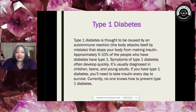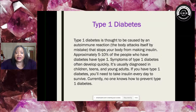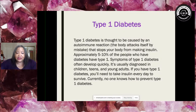Type 1 diabetes is thought to be caused by an autoimmune reaction — when the body attacks itself by mistake and stops making insulin. This affects a small but significant portion of people: five to ten percent. It usually develops when you're young — a child, teenager, or young adult — and if you develop this type you will need to take insulin daily to survive. Currently there is no way to prevent it.